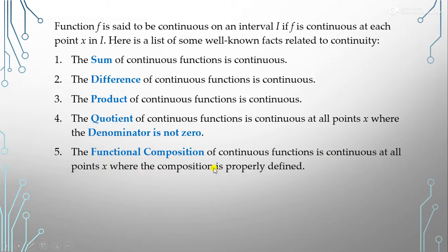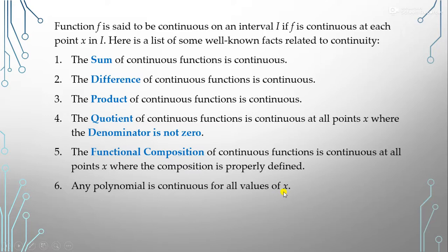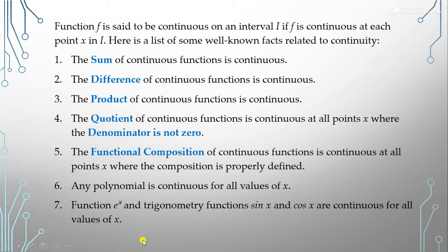The functional composition of continuous functions is continuous at all points where the composition is properly defined. Any polynomial function is always continuous for all values of x. Also, any exponential function and trigonometric functions such as sin x and cos x are all continuous for all x.